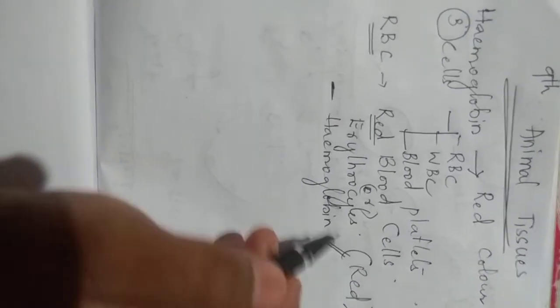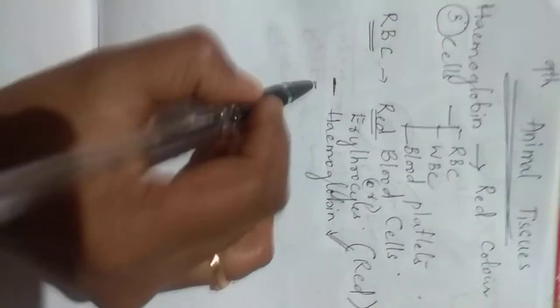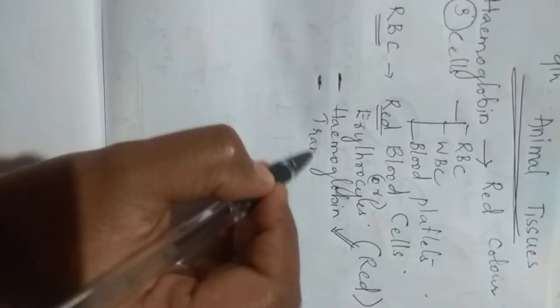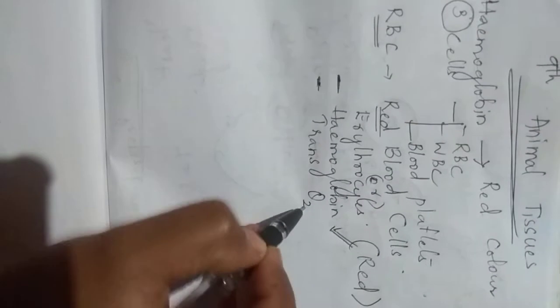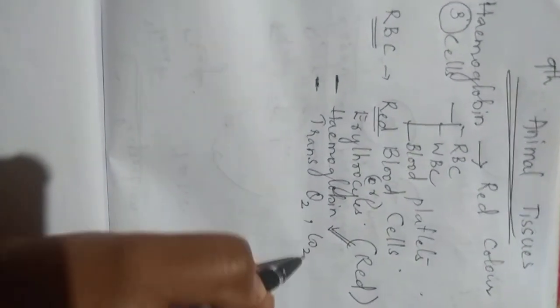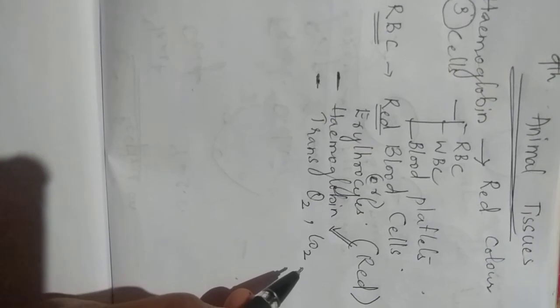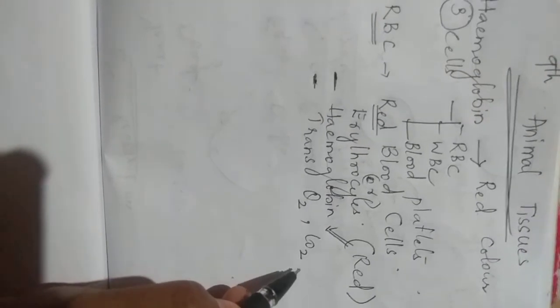And what is the function of this protein? Hemoglobin helps in transport of oxygen and carbon dioxide. One ml of human blood has about 5 millions of red blood cells which live for 120 days.